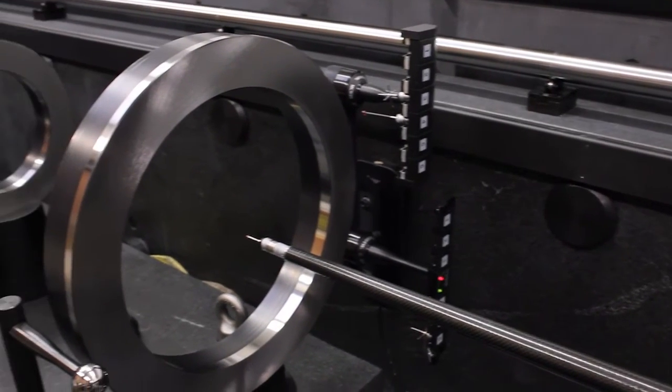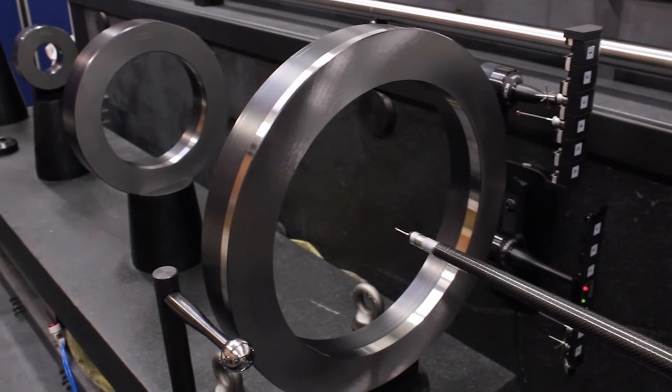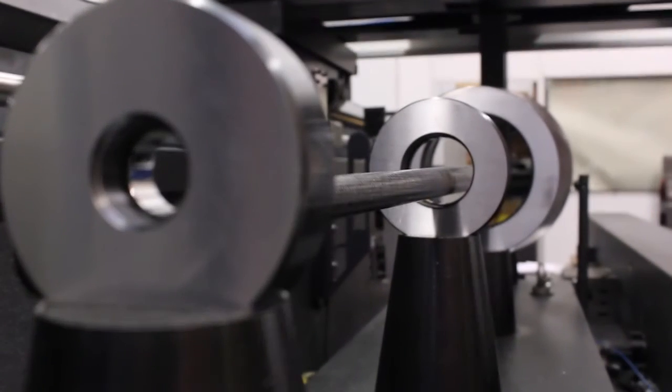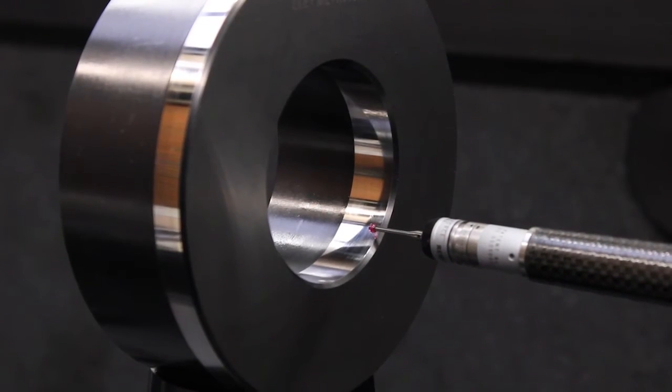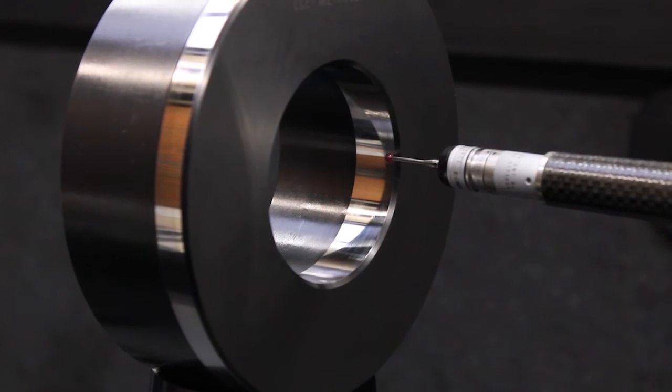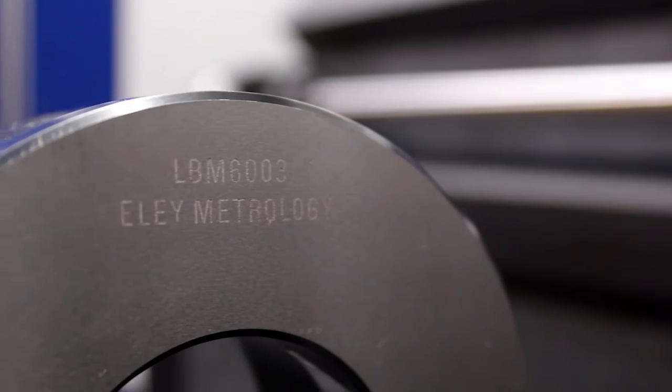As a further supplement to ISO 10360, Elimetrology offers a system of master ring gauges built into a fixture. The rings offer both internal and external masters so that direct comparison between measurements can be made.